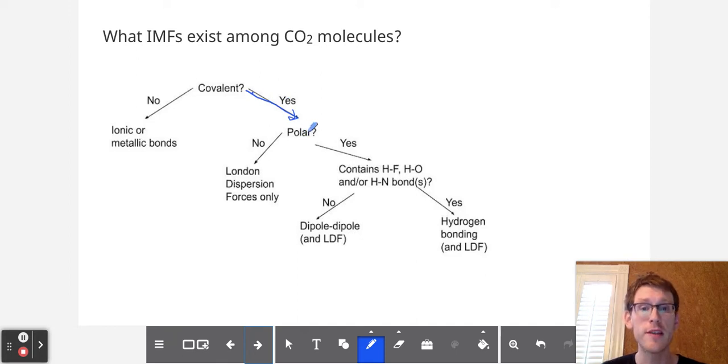Next question is, is this polar? And for that, we're going to have to look at the Lewis structure, which I'm going to skip the showing your work part of this to get to the Lewis structure. This is carbon dioxide. Oxygen is more electronegative than carbon. So there's a dipole moment pointing towards the oxygen. But there's also another dipole moment pointing towards this oxygen. And because the dipole moments are equal and opposite, there is no net dipole moment.